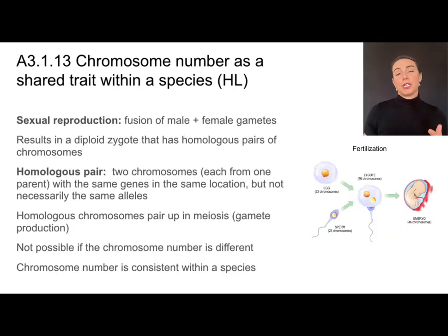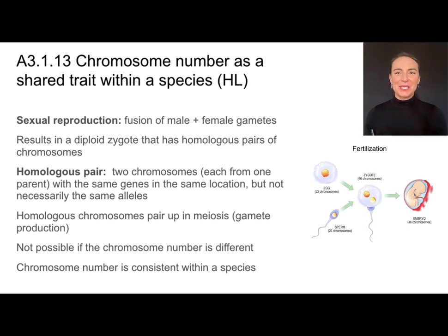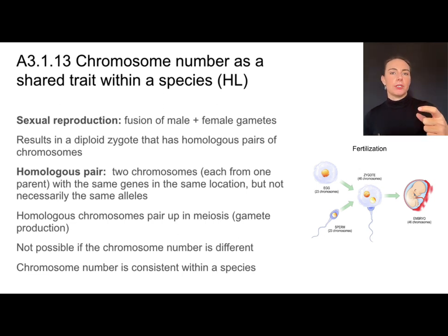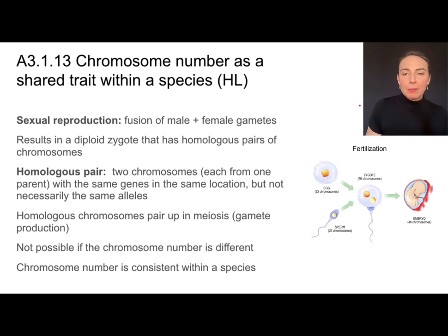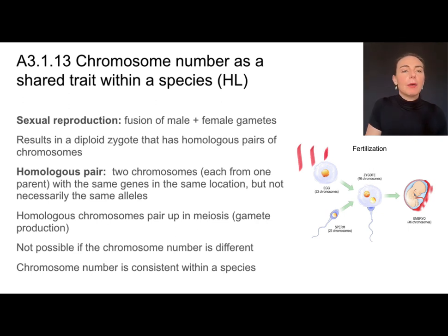Sexual reproduction, chromosomes, and cell division are discussed more in depth in other parts of the curriculum, but because we're talking about species I want to dive a little deeper into chromosome number being a shared trait. During gamete production — that's producing eggs and sperm — the chromosome number is reduced by half. In gametes the chromosomes do not come in pairs; they are haploid.